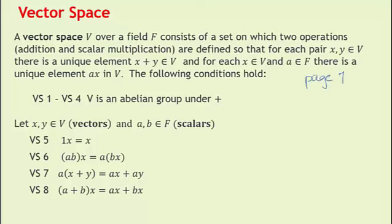You will find the following properties on page 7 in your textbook. Vector space properties 1 through 4, each written out carefully, all say together that the vector space V — the set V — is an abelian group under addition. If you take x, y in V and a, b in F, we call the elements of F scalars, and the elements of V vectors.